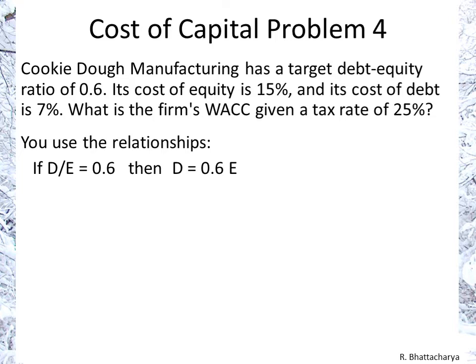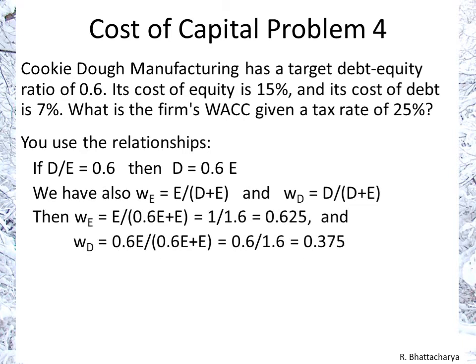Remember, the weight of debt plus the weight of equity has to equal 1. The weight of equity is equity divided by total capital, which is debt plus equity. Since debt is 0.6 times equity, substituting gives us equity over (0.6 equity + equity), which is 1 over 1.6, equaling 0.625.